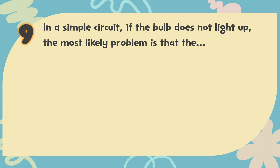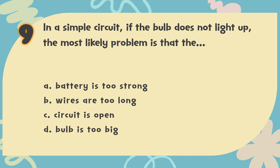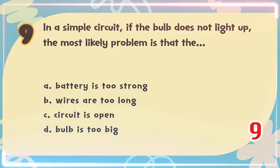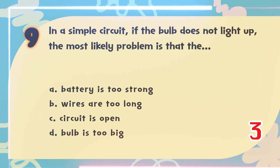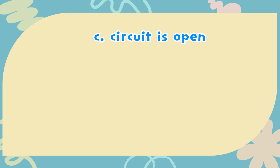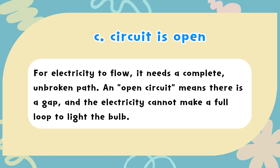Number 9: In a simple circuit, if the bulb does not light up, the most likely problem is that the — A. Battery is too strong, B. Wires are too long, C. Circuit is open, D. Bulb is too big. The correct answer is C. Circuit is open. For electricity to flow, it needs a complete, unbroken path. An open circuit means there is a gap and the electricity cannot make a full loop to light the bulb.